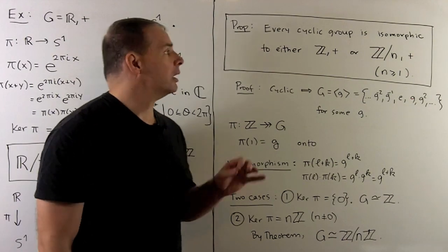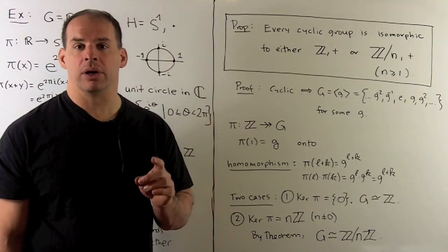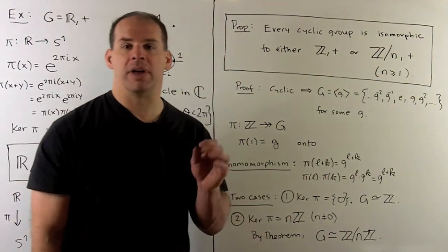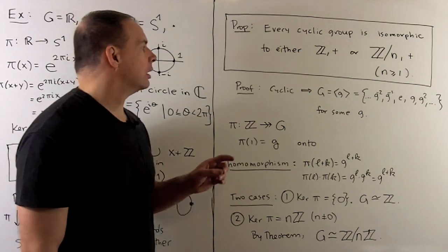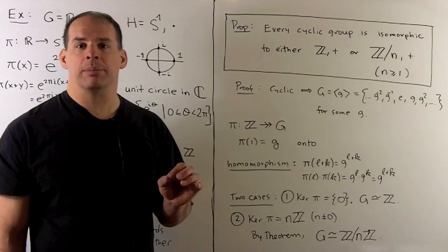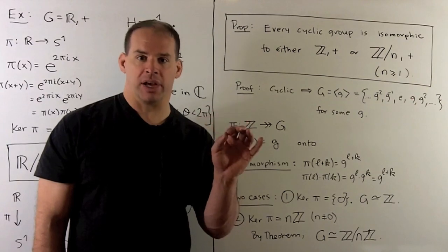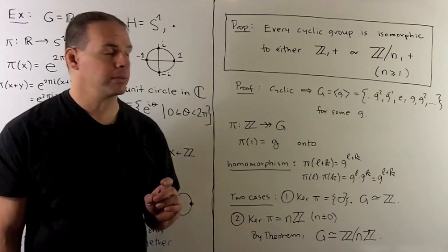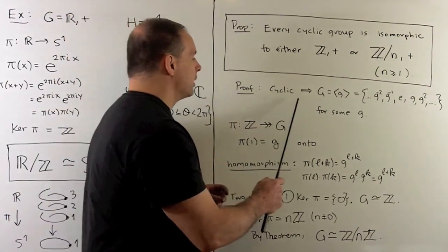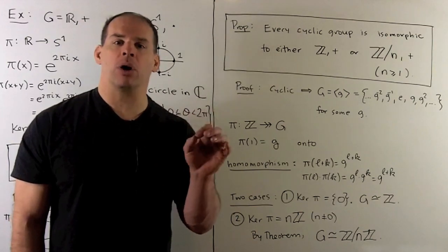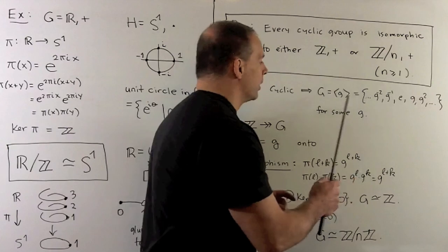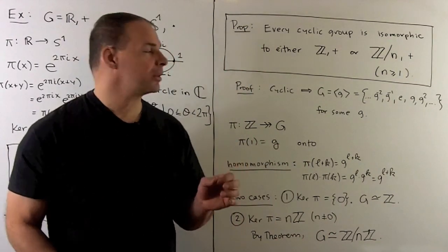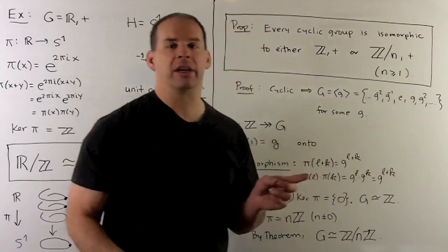Another application of the theorem — a proposition: every cyclic group is isomorphic to either the integers under addition, or a modular integer group Z mod n for n ≥ 1. This gives us a classification scheme for cyclic groups: all we need is the number of elements. If it has n elements, it's Z mod n; if it's infinite, it's isomorphic to the integers. Recall, cyclic means every element in our group G can be written as a power of a fixed element g — we take all powers of g, positive or negative, with g⁰ being the identity.